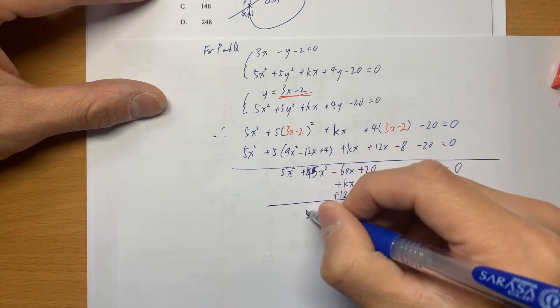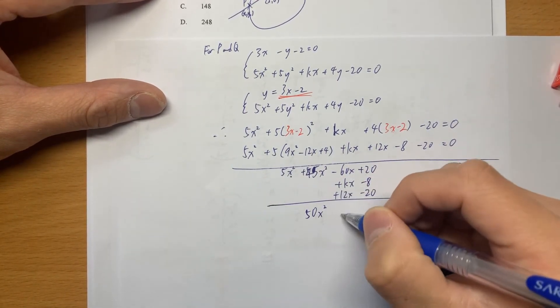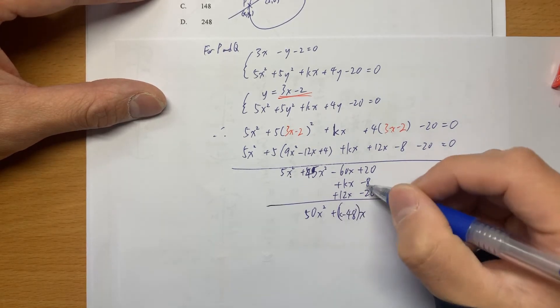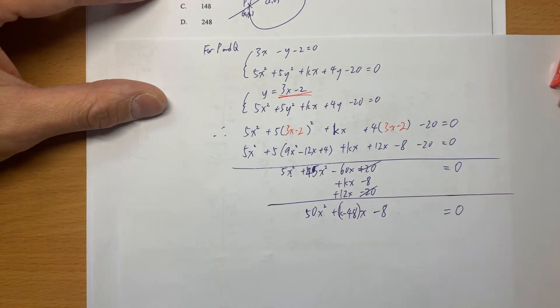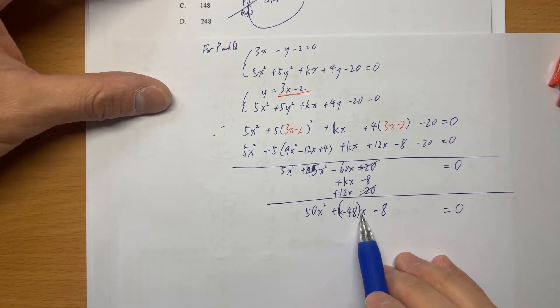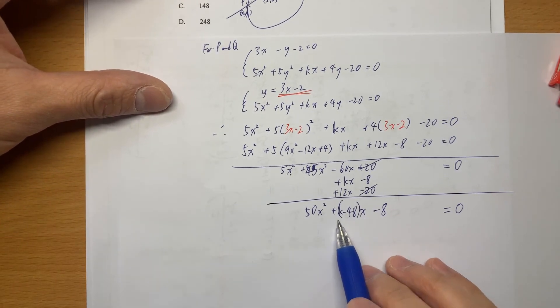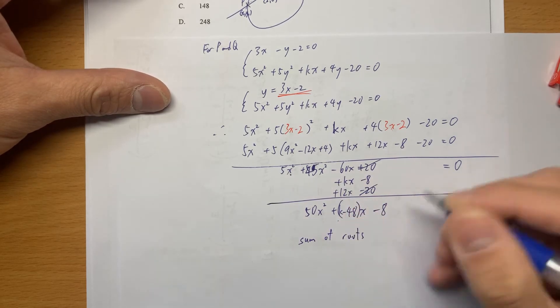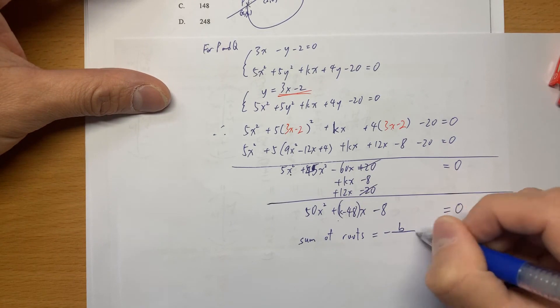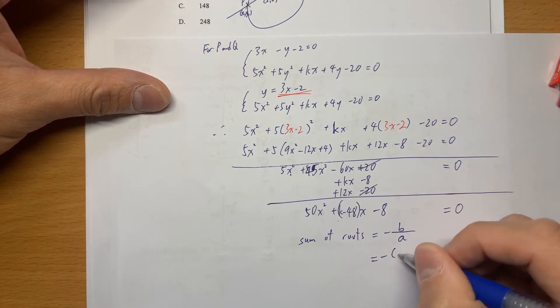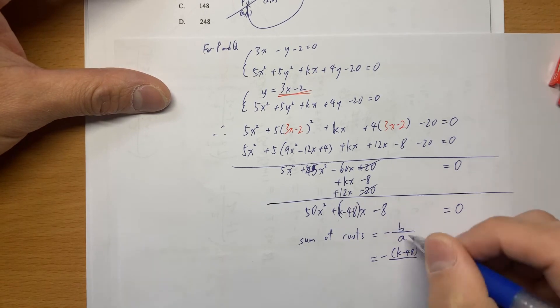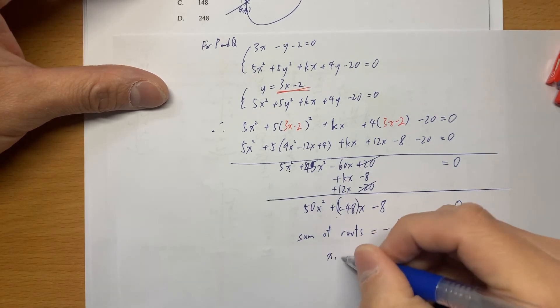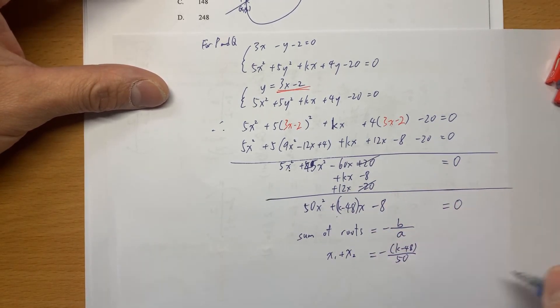Minus 60x and then plus 20 plus Kx plus 12x minus 8 minus 20 is 0. So 5 plus 45 we got 50x squared. So we don't really need to use quadratic formula because we can get the sum of roots. There's negative B divided by A. So negative B here is K minus 48. A itself is 50.